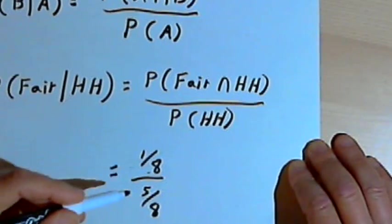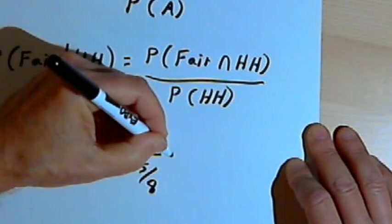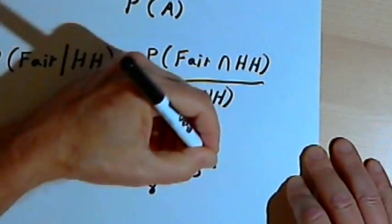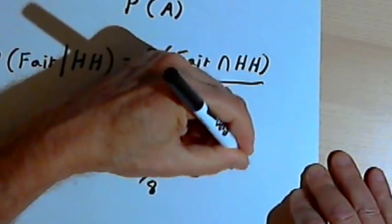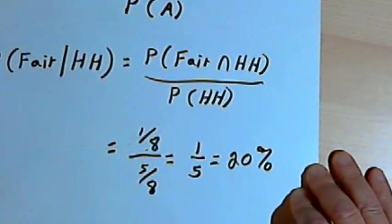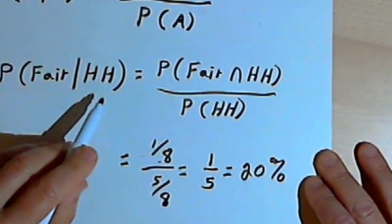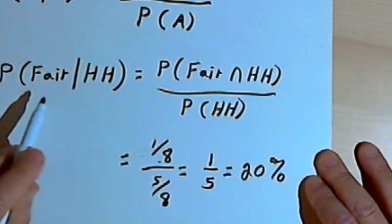Now I've got 1 over 8 divided by 5 over 8. Well, that's just 1 over 5. I could write that as 20%. So there's only a 20% probability that when I flipped that coin and got two heads, that it was the fair coin.